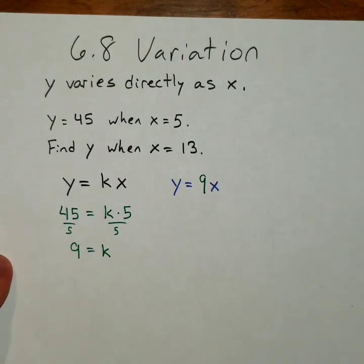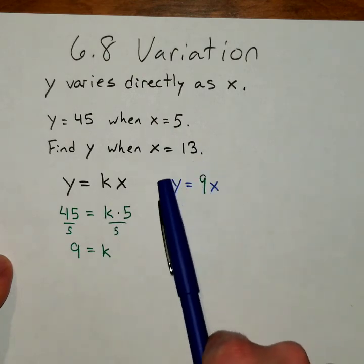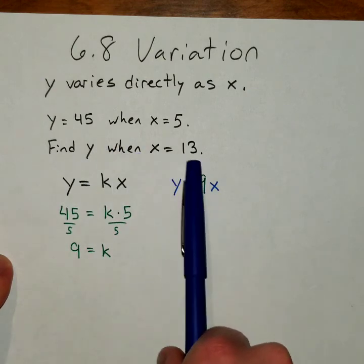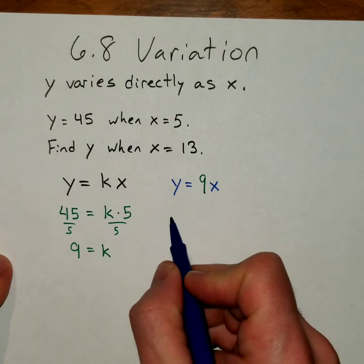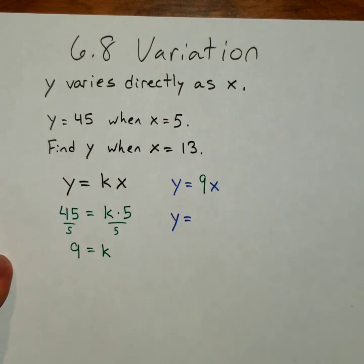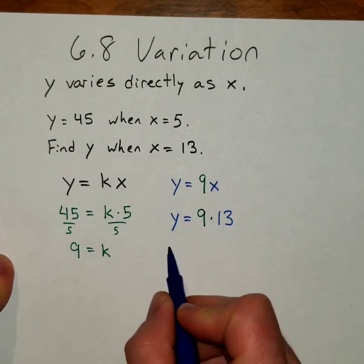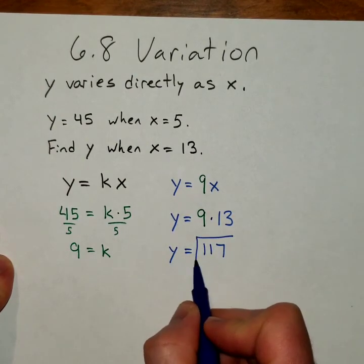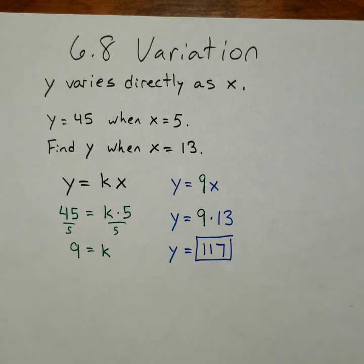So we get y equals 9 times x. And then everything works off of this new equation. Now we just know what k is. Then it says find y when x is 13. So we're going to plug in the 13. y equals 9 times 13. And of course, 9 times 13 is 117. So y is equal to 117. That is the answer. That's the number that is equal to y when x is 13.